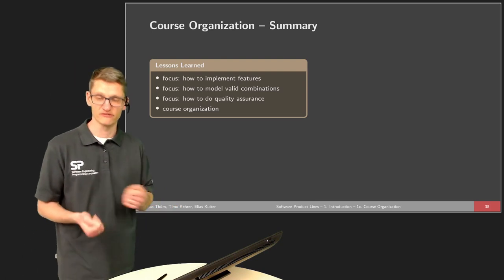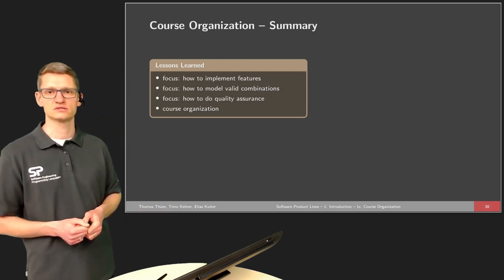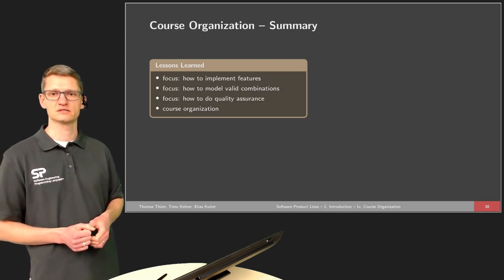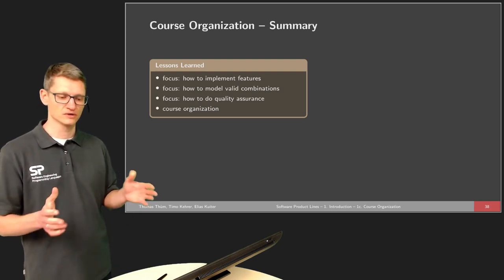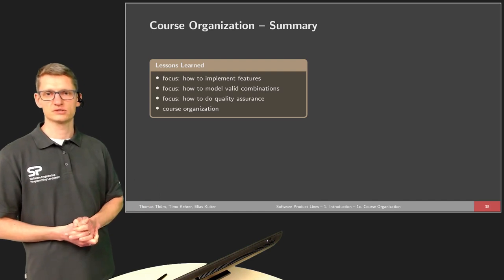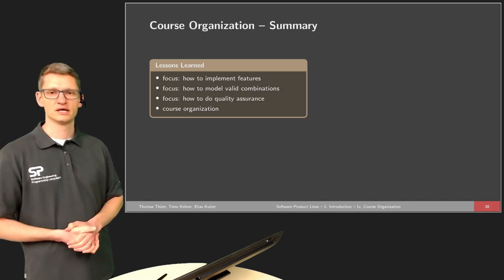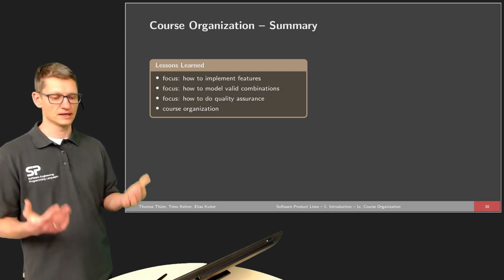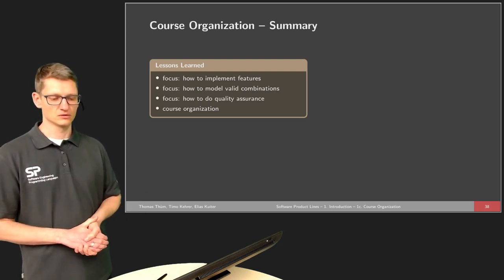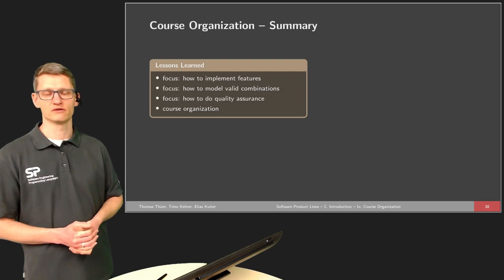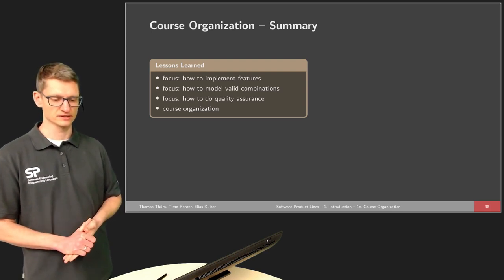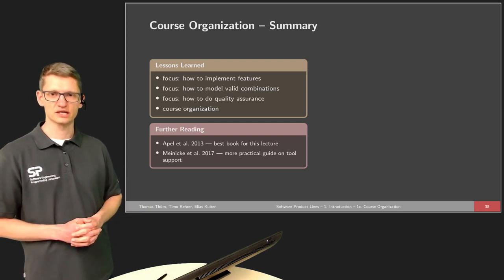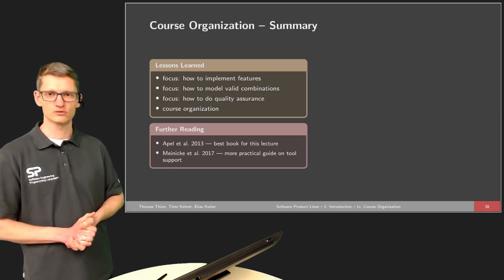But implementing features is not the only thing that matters. We also need to understand what are valid combinations of these features, how to model them, how to analyze these large configuration spaces, but also how to do quality assurance. We have three particular lectures on quality assurance. We have five lectures on how to implement features and one particular lecture on how to model valid combinations and how to analyze it. We hope that you will find something interesting in this course and will stay with us.